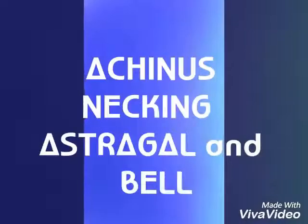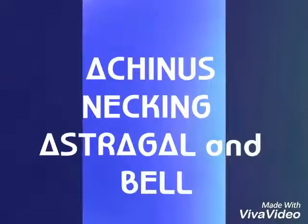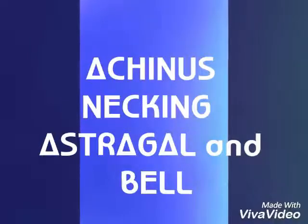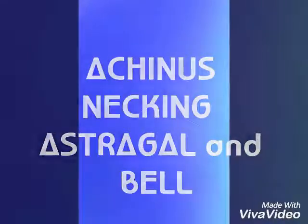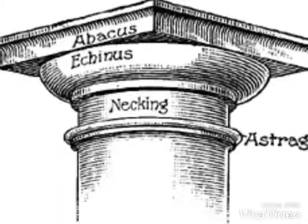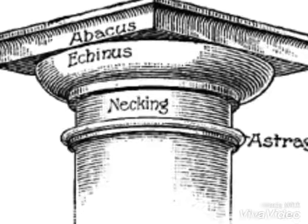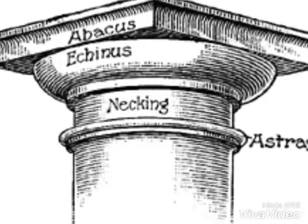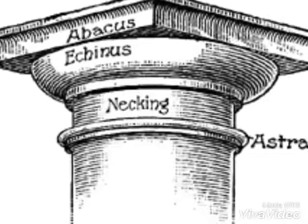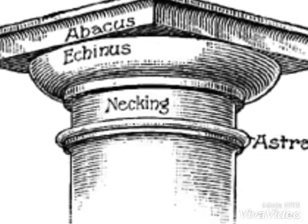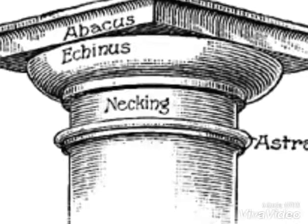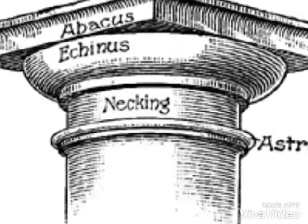And now we come to the acanthus necking, astragal, and bell. I don't need to explain — you can see in the picture the abacus, acanthus, necking, astragal, and the bell.